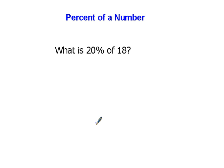What is 20% of 18? 20% is equal to, the decimal's right here in 20%, we have to move it over two spots always to get our decimal. It's equal to 0.20.